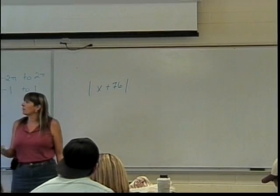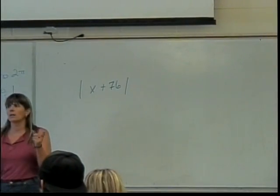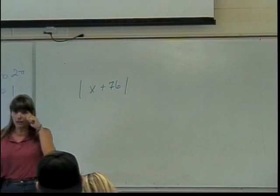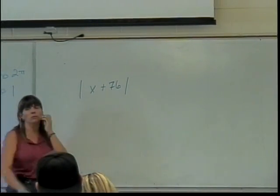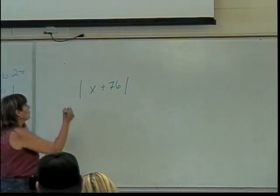Then I need to shrink vertically by a factor of 1 over 53. Vertical is where? Inside or outside the function? Outside. So that means it's outside the absolute value bars. And when I write it here, what do I write? 1 over 53.